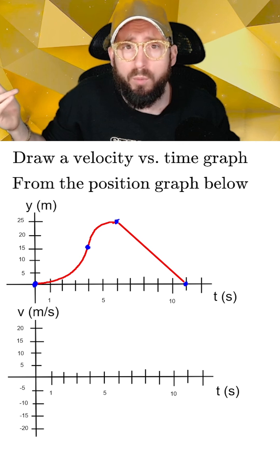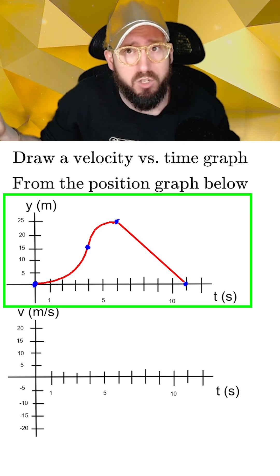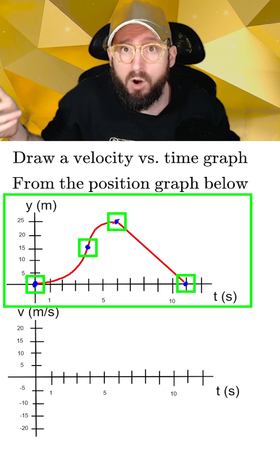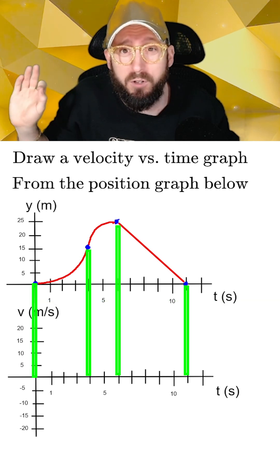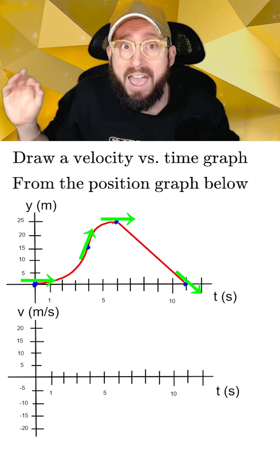Let's consider our previous problem where we drew the position graph for a dog on a rocket ship. Here we use critical time points to mark when the dog's movement was changing. Now for a velocity graph we are going to use these same critical time points, but look at what the slope is at each point.